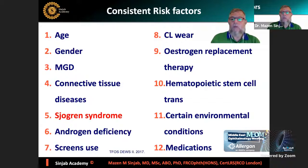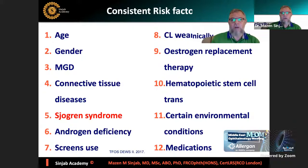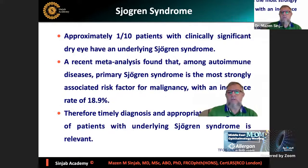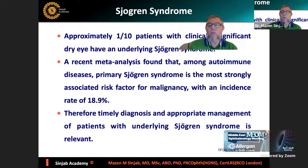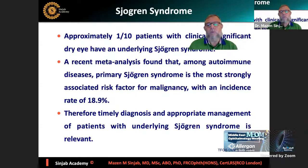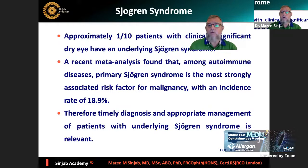I want to highlight Sjögren's syndrome. We have to ask the patient about symptoms and look for signs of Sjögren's syndrome in every patient suffering from chronic dry eye, because about 10% of patients have underlying Sjögren's syndrome. In a meta-analysis, almost 20% of people with primary Sjögren's syndrome are associated with malignancies. So it's very important to diagnose early and refer. When I find a patient with very chronic dry eye and even a doubt of Sjögren's, I refer them to a rheumatologist.